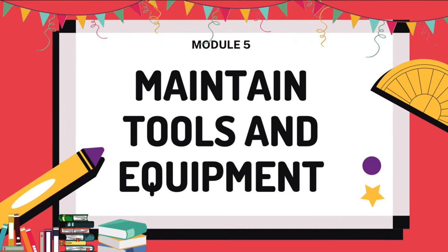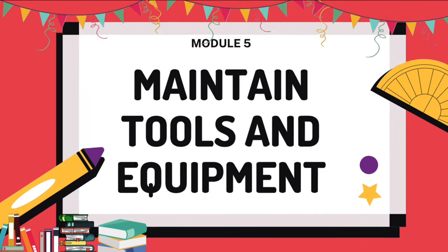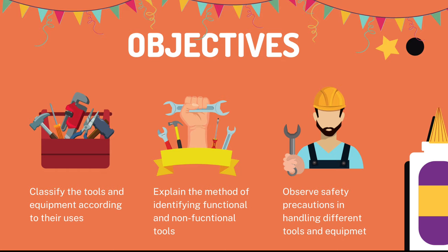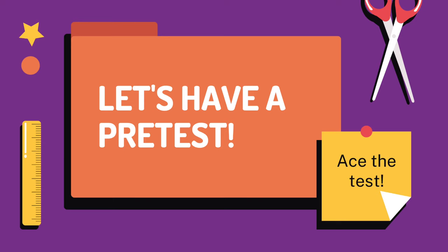Module 5: Maintain Tools and Equipment. At the end of our lesson, these are the three objectives that we need to aim. But before we go through with our lesson, let's have a short pre-test.